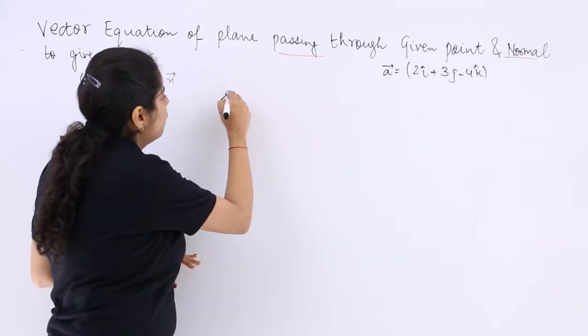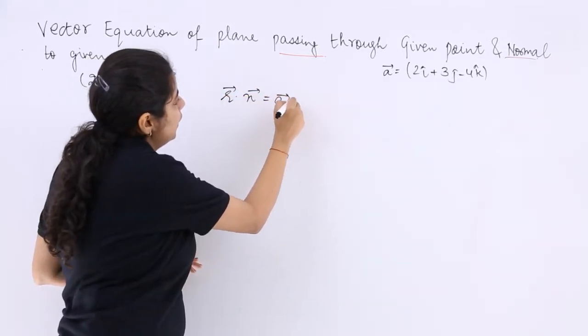So what will be the formula? What will be the answer like? r·n is equal to a·n.